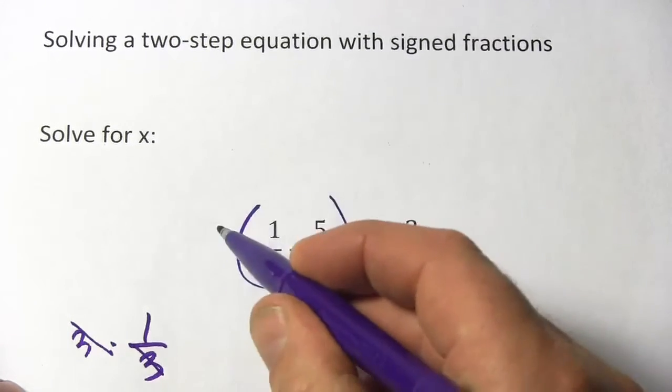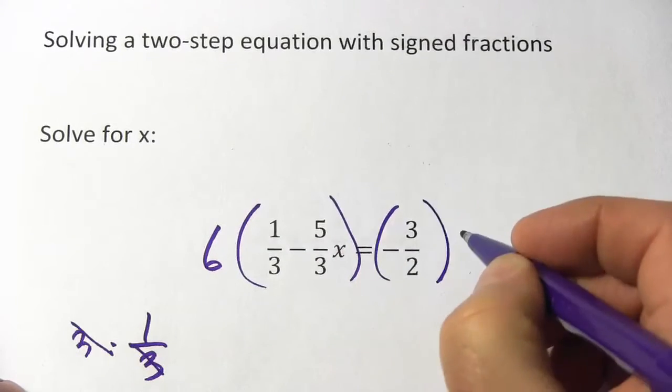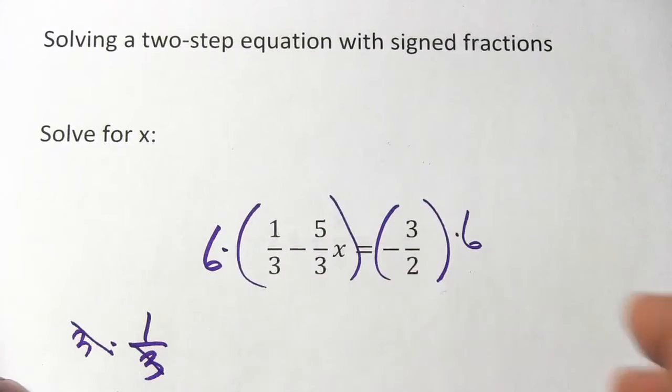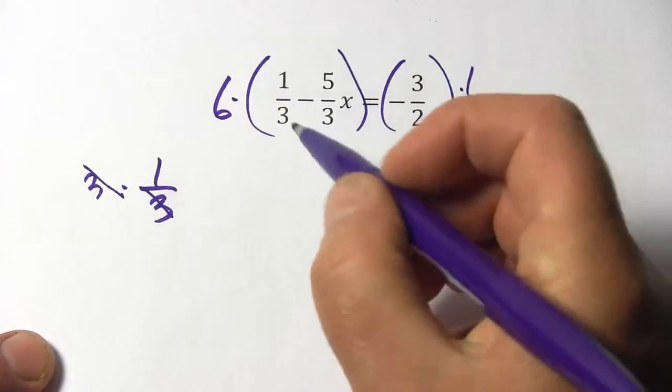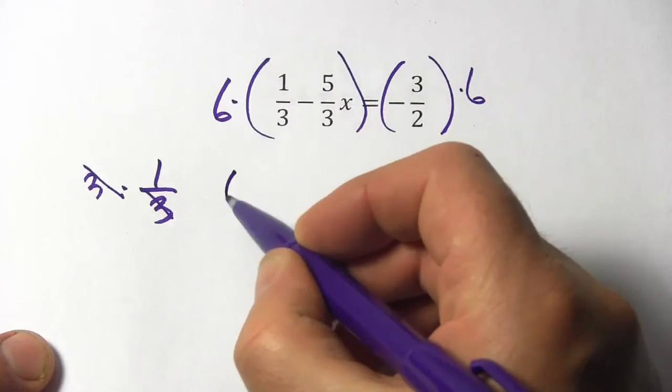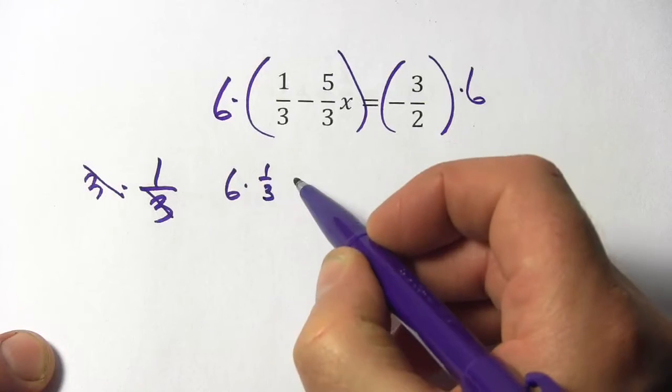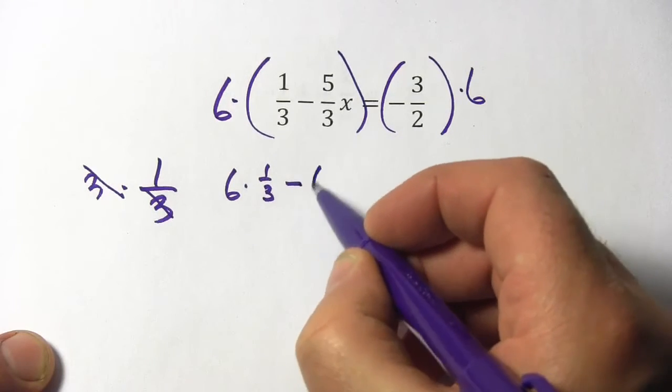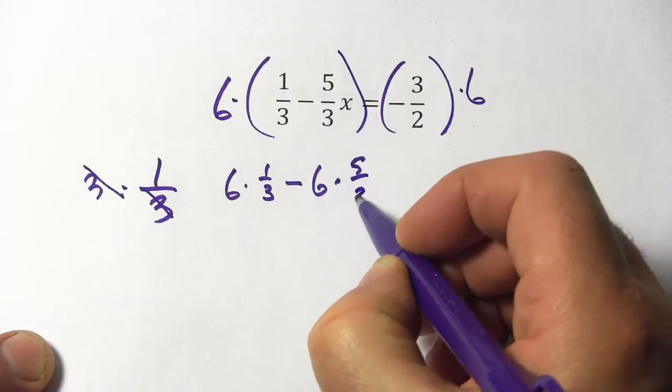Both sides of the equation multiplied by 6. So on the left here, we need to distribute the 6. So this becomes 6 times 1/3 and minus 6 times 5/3x.